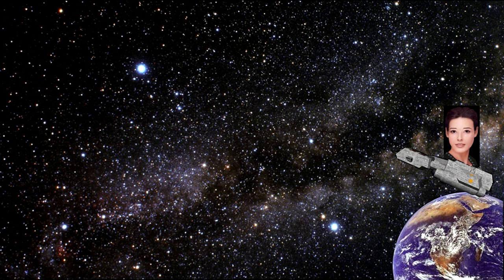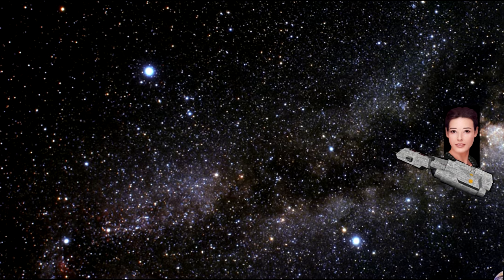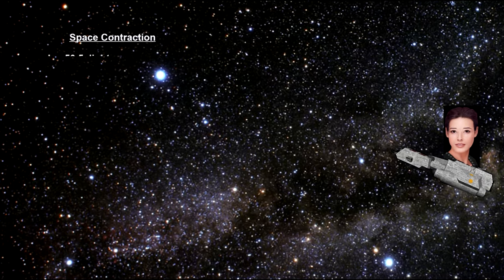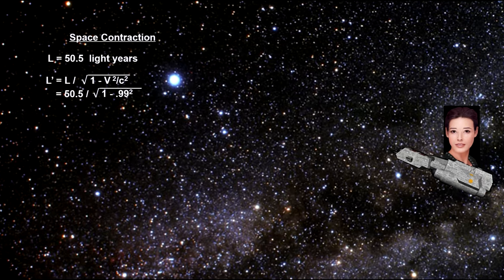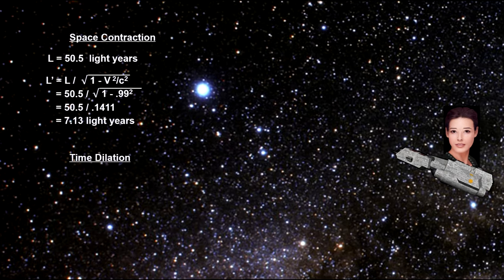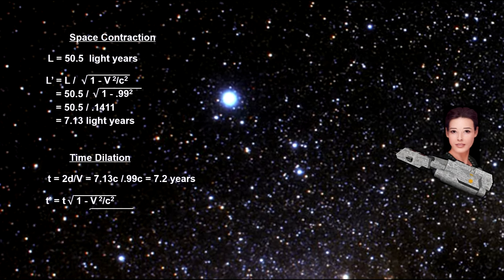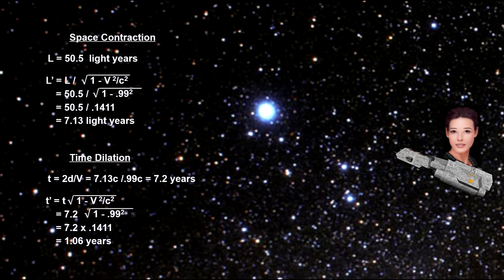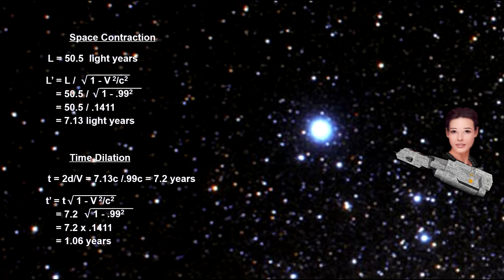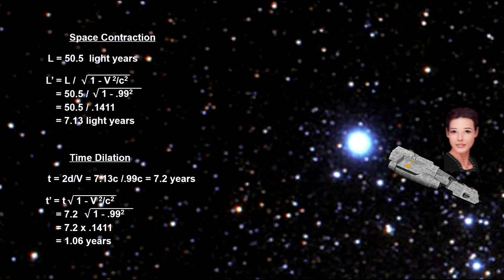But from the point of view of the twin on the spaceship, she is motionless, and the twin on the Earth is moving away and back. And, like our cosmic ray muons, she sees the distance to Vega at only 3.5 light-years due to space contraction.